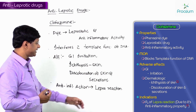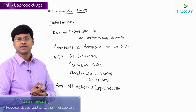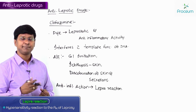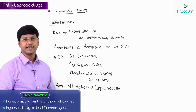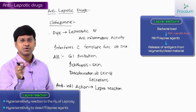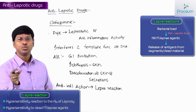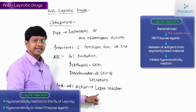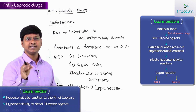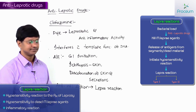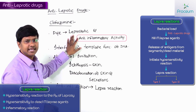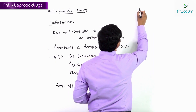Lepra reaction is a hypersensitivity reaction that occurs when treating leprosy patients. The anti-leprotic drugs kill the Mycobacterium leprae agents, and the dead mycobacterial material initiates a hypersensitivity reaction called lepra reaction. There are two types: type 1 and type 2. Since it is essentially an inflammatory reaction, clofasimine can be given due to its anti-inflammatory activity.